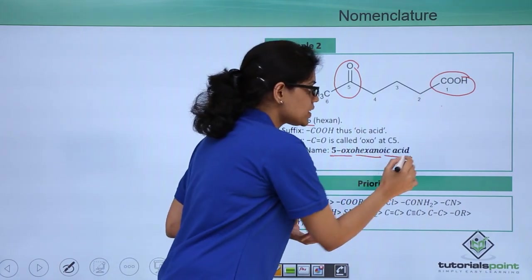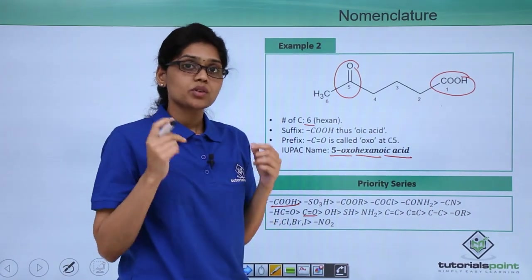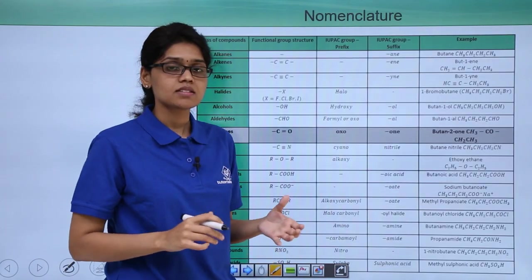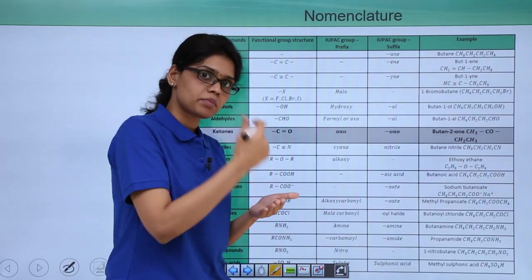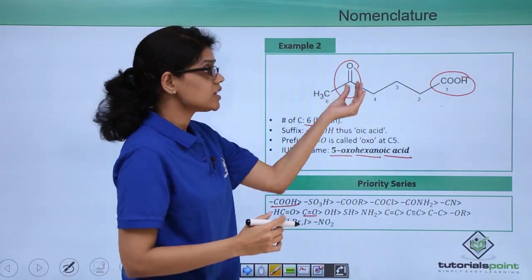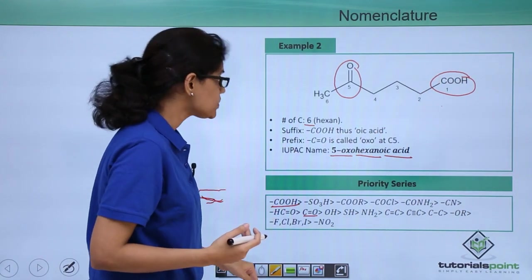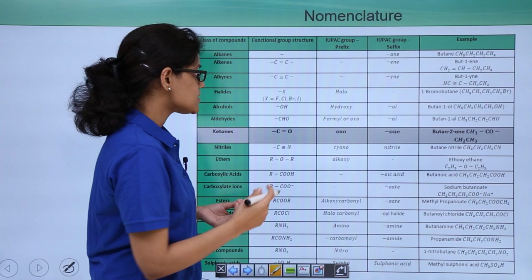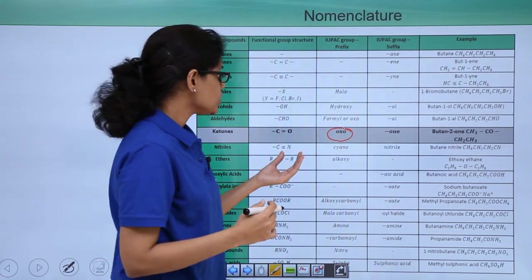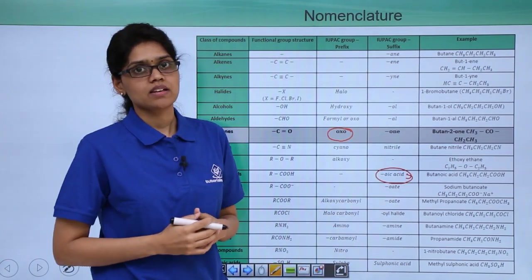The principal functional group is carboxylic acid COOH whose suffix will be oic acid. If you remember we had a table here which essentially summarizes how the functional group changes its name when it becomes a prefix and a suffix. We can see that in our example here C double bond O is acting as a prefix and COOH is acting as your suffix or principal functional group. So based on that we can see that C double bond O here is acting as your 5-oxo and your COOH is essentially acting as your oic acid, that is hexanoic acid.